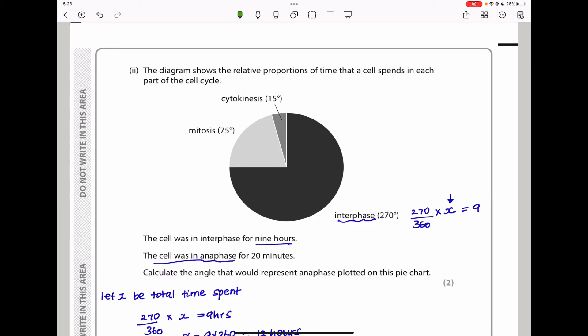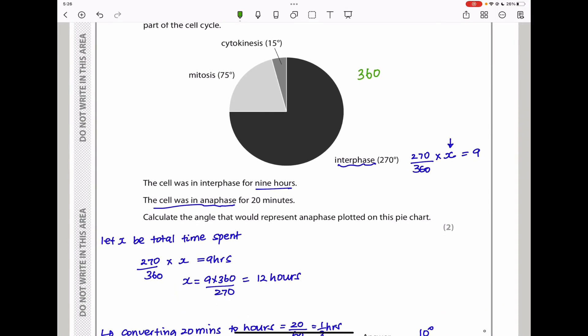The diagram shows the relative proportions of time that a cell spends in each part of the cell cycle. We can see cytokinesis, mitosis, and interphase. Since this is a pie chart, the total angle is 360 degrees. They say the cell was in interphase for nine hours. If it was in interphase for nine hours, we need to find the time. Let X be the total time spent. 270/360 times the total time gives us nine hours, and we can make X the subject to find the total time spent.